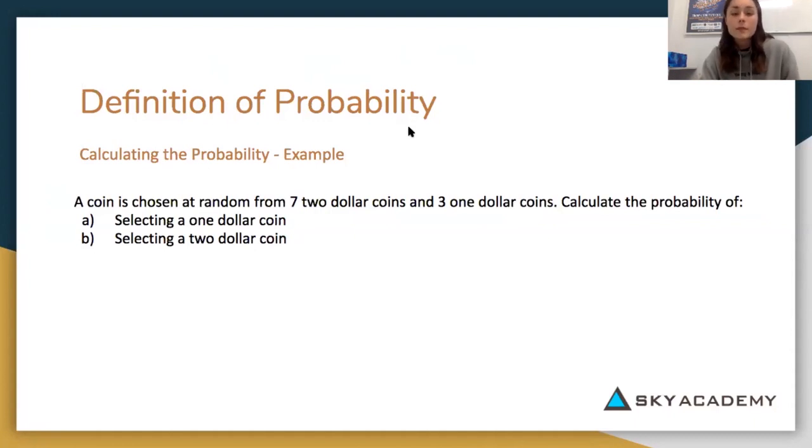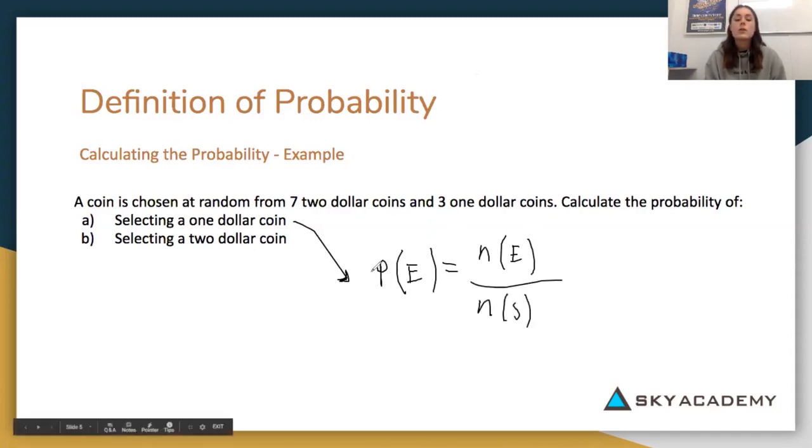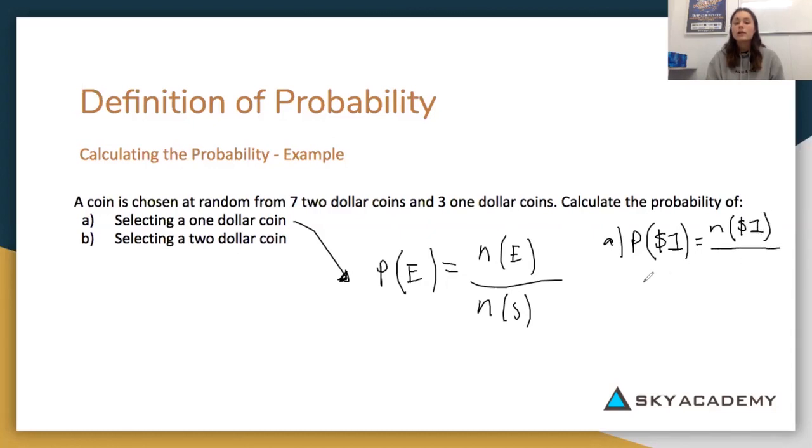So now let's have a look at an example of probability. A coin is chosen at random from seven two dollar coins and three one dollar coins. Calculate the probability of selecting a one dollar coin. So our formula, if you remember, is the probability of an event equals the number of the event that you want, the favorable event, over the number of the sample space.